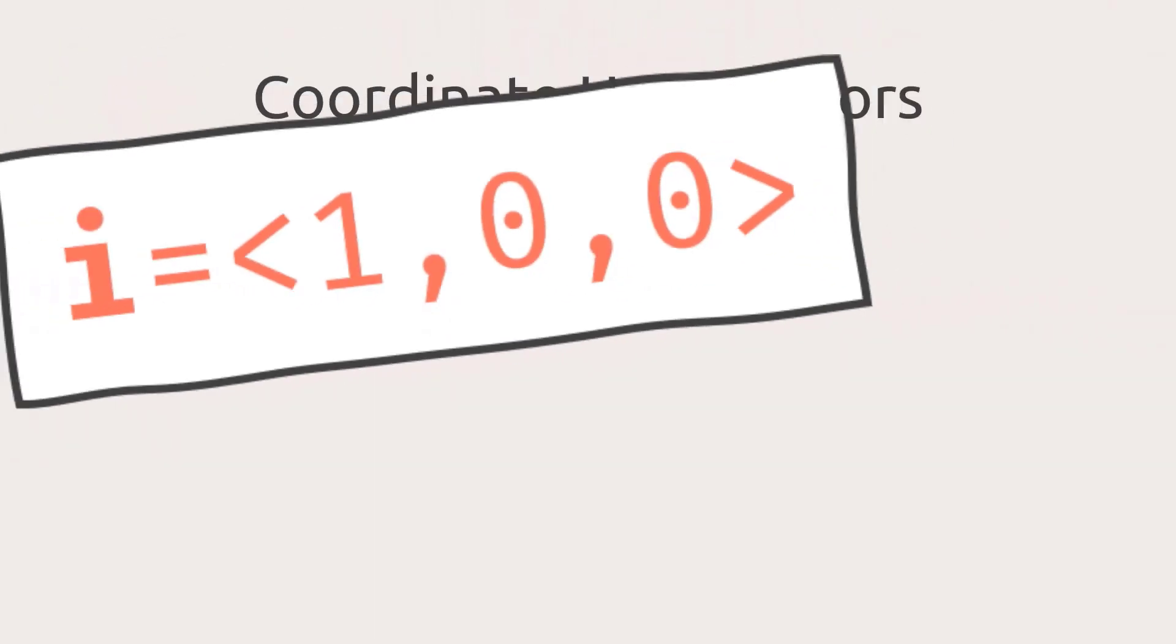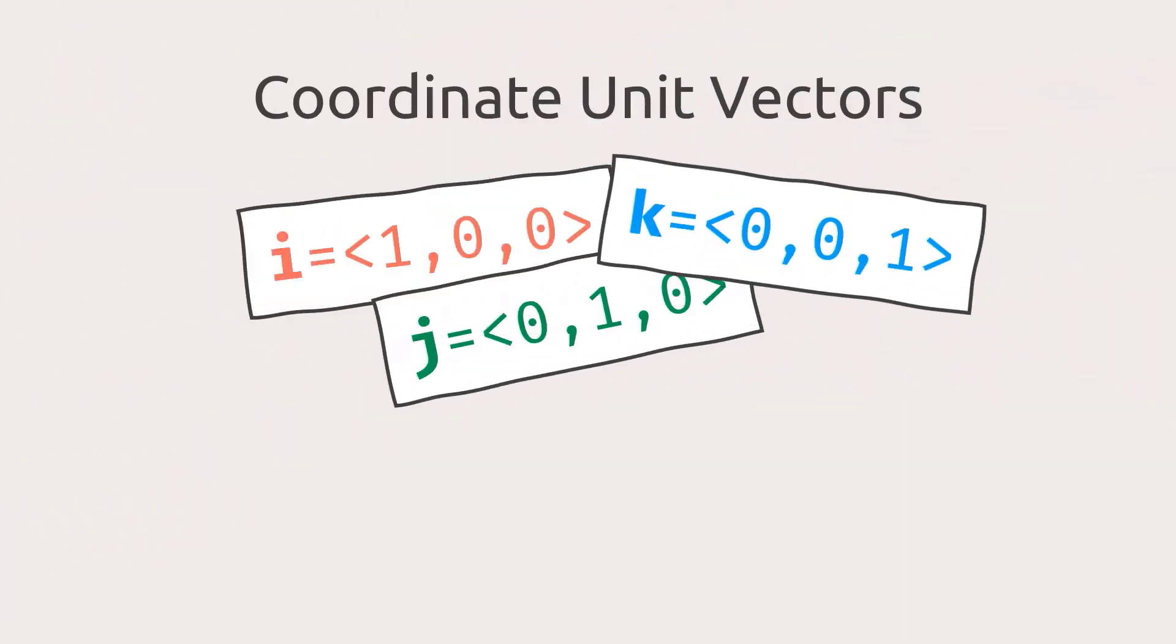Now, let's talk about coordinate unit vectors. They are i, j, and k. What's so special about them? Each one of them is parallel to one of the coordinate axes. More specifically, i is parallel to the x-axis, j is parallel to the y-axis, and k is parallel to the z-axis. And they all point in the positive direction of the coordinate axes.